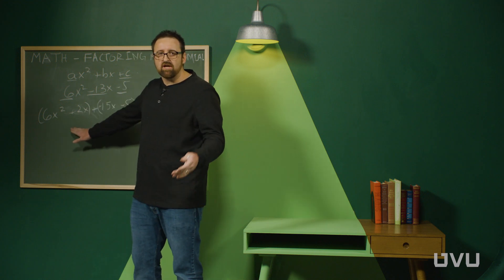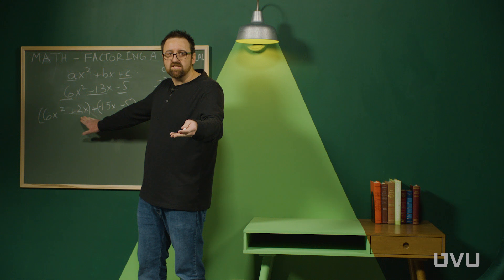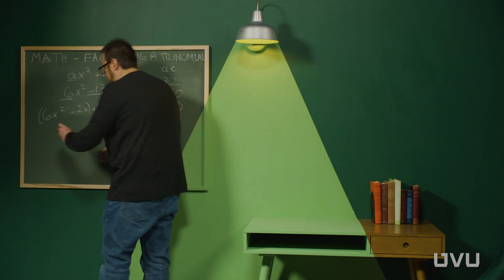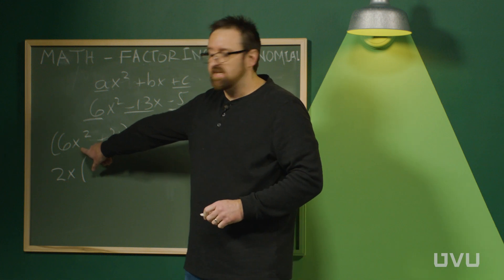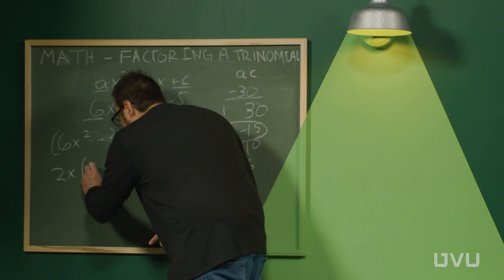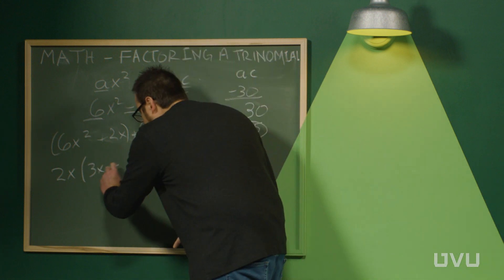In each of these groups, you're now going to look for what you can factor out as a greatest common factor. So in this case, you'd have 2x can come out. That would leave 6x squared divided by 2x gives you a 3x. And 2x divided by 2x gives you a 1.